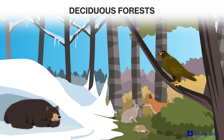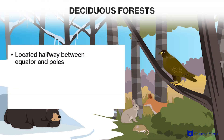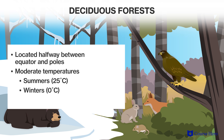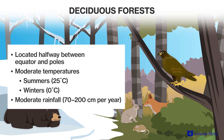Like temperate grasslands, deciduous forests are also located about halfway between the equator and the poles, mostly in the northern hemisphere. They are characterized by moderate temperatures, with warm summers averaging 25 degrees Celsius and cold winters averaging below zero degrees Celsius. Rainfall is moderate to high, with 70 to 200 centimeters distributed evenly around the year. The primary vegetation are deciduous trees, such as oaks and maples. Many animals hibernate or migrate to escape the cold winters — for example, monarch butterflies migrate to warmer climates closer to the equator.